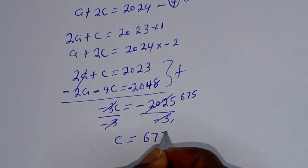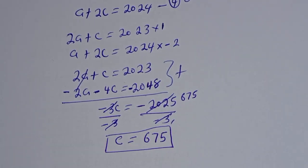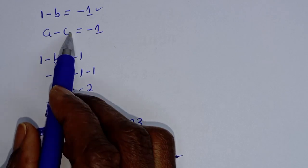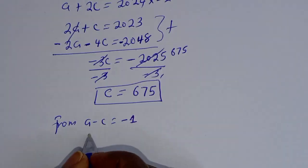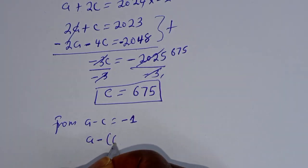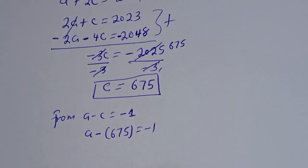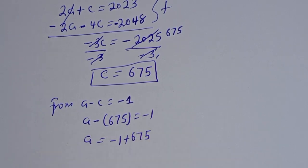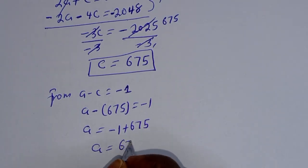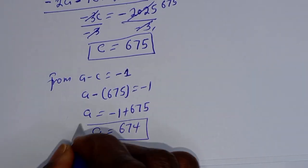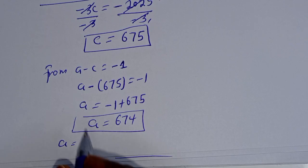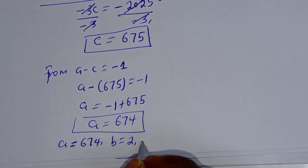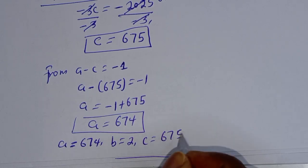We've found c = 675. From a - c = -1, we get a - 675 = -1, so a = 674. Therefore from the second case: a = 674, b = 2, c = 675.